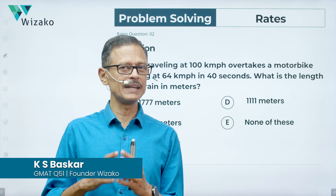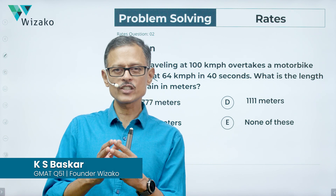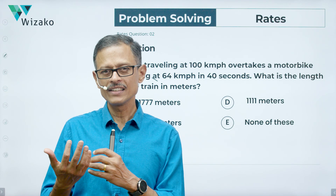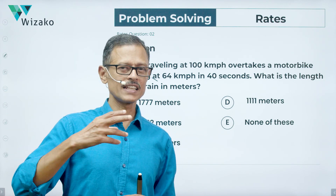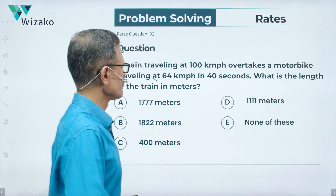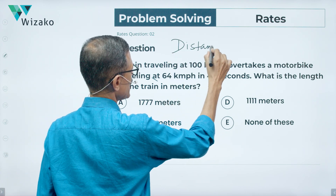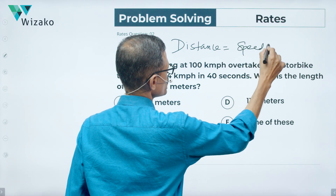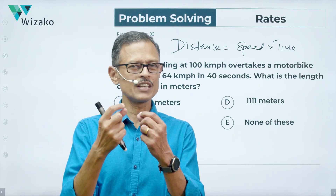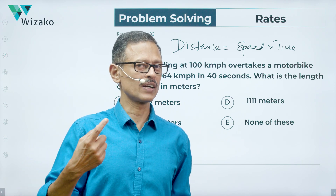In this video we're going to be solving a medium difficulty GMAT problem solving question — a rates question. Within rates we are looking at speed, time, and distance, and the subconcept is computing the length of a train crossing another object. Any speed-distance-time question will revolve around this relationship: distance is the product of speed and time. That's the core concept we'll be building on.